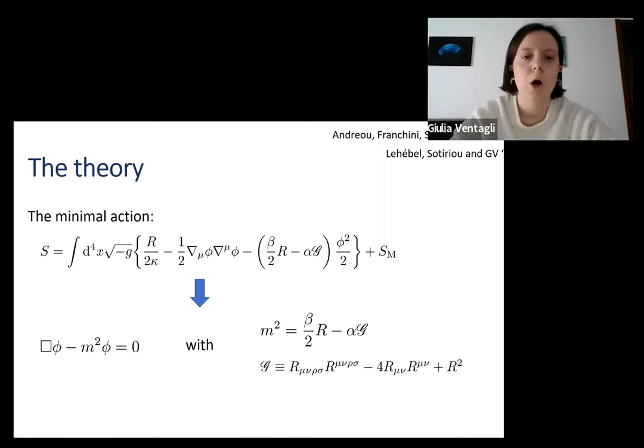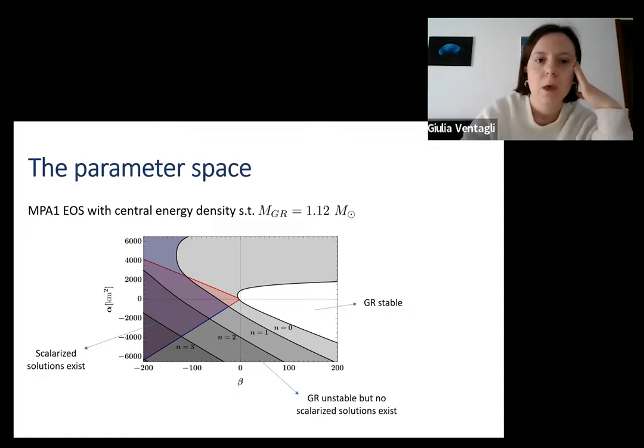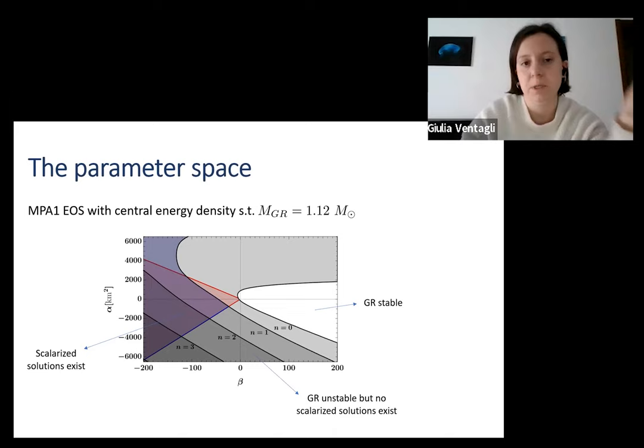The first main result of our paper was the study of the parameter space. Here I'm showing a specific case for an MPA1 equation of state. It's not the only one that we consider; we also consider a SLy equation of state. In this case, we are focusing on a specific central energy density such that when studied in the GR case, this gives an ADM mass of 1.12 solar masses. Just to remind you, beta is the coupling parameter of the Ricci scalar and alpha is the coupling parameter of the Gauss-Bonnet.